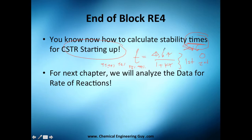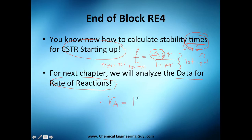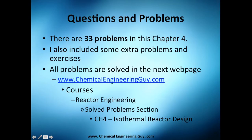For the next chapter we will analyze the data for rate of reaction, which is pretty cool. We're going to analyze a lot of these rate of reactions and whether they can be modeled as first order, second order, nth order, or whatever. Now we're getting more into the generation concept, but that's for chapter five.